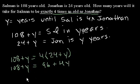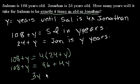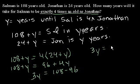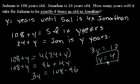Now we just solve this equation. I'm going to skip some steps because I think this part is easy. 3y will equal 108 minus 96, so 3y is equal to 12. So y is equal to 4. Our algebra has told us that in four years Salman is going to be exactly four times as old as Jonathan.